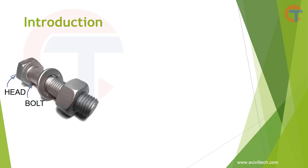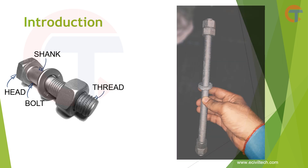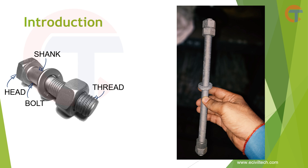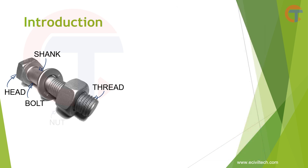Introduction: a bolt is basically made of a head, shank, and thread. You can find a bolt without a head or without a shank, but you can never find a bolt without the threaded shank — thread is the very important part of the bolt. This is the nut. The main function of the nut is to connect parts with the mating bolt. The thread of the nut and the thread of the bolt must match, only then can you tie the nut onto the bolt.